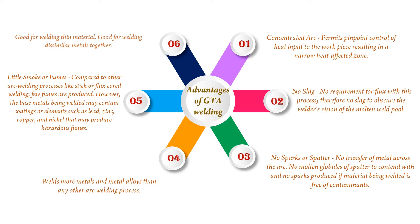3. No sparks or spatter — no transfer of metal across the arc, no molten globules or spatter to contend with, and no sparks produced if the material being welded is free of contaminants. 4. Welds more metals and metal alloys than any other arc welding process.